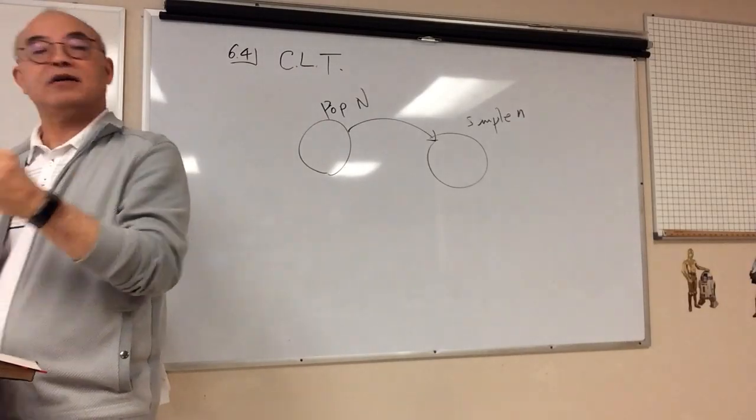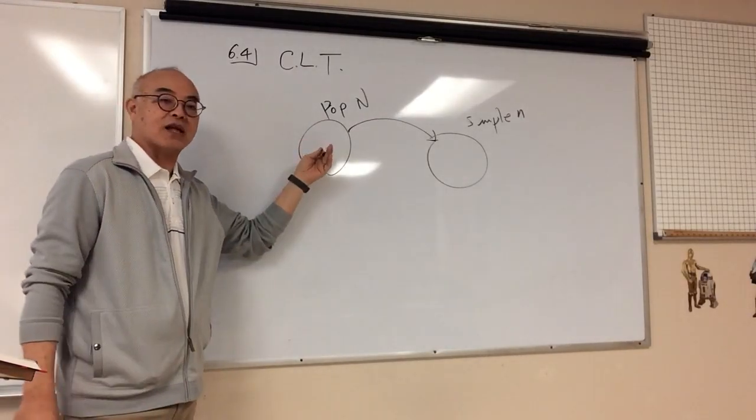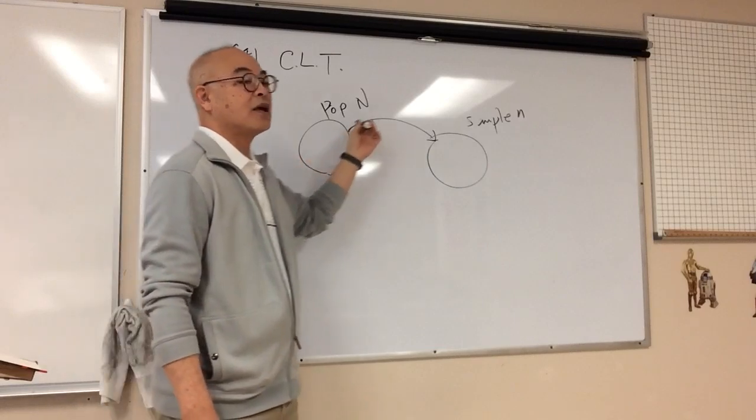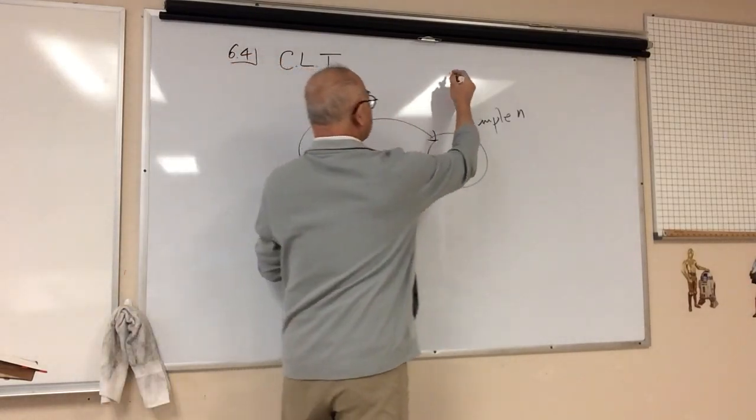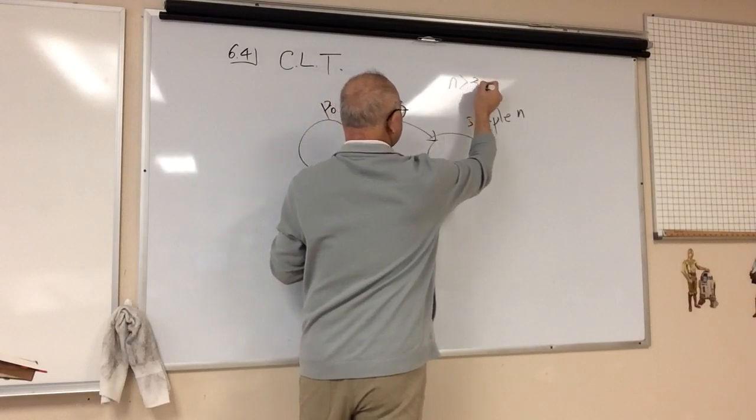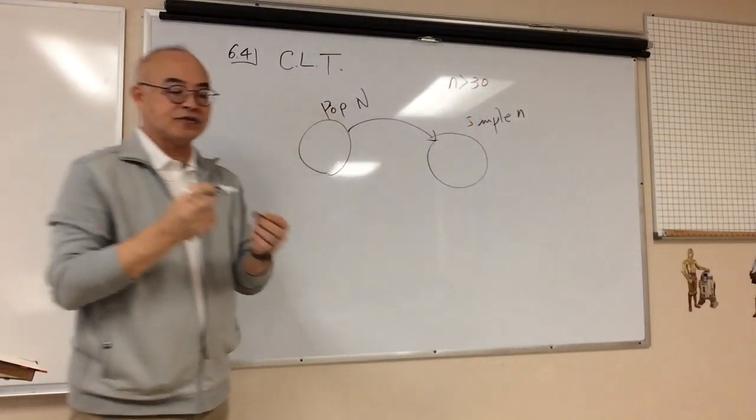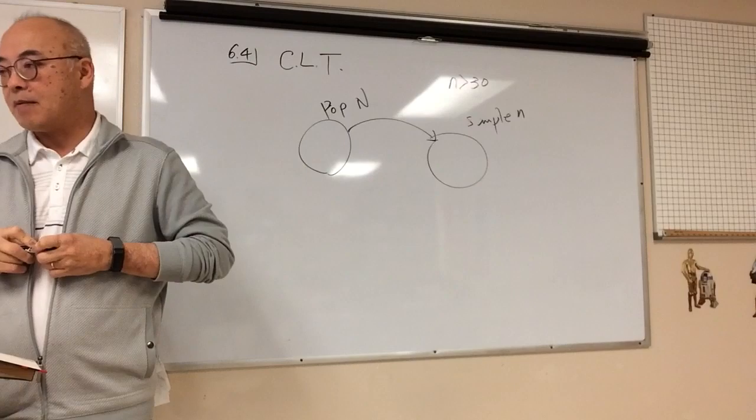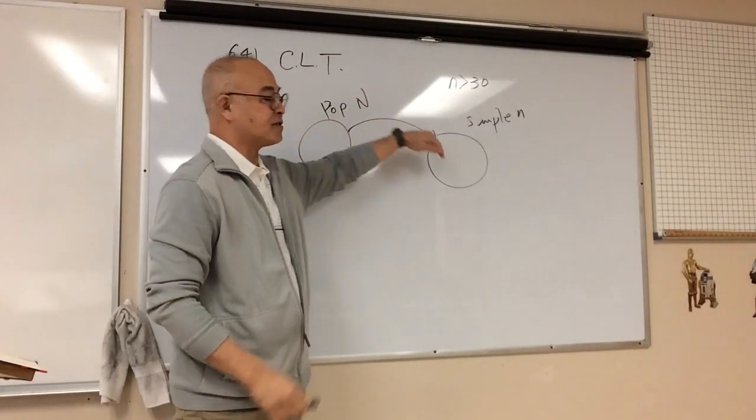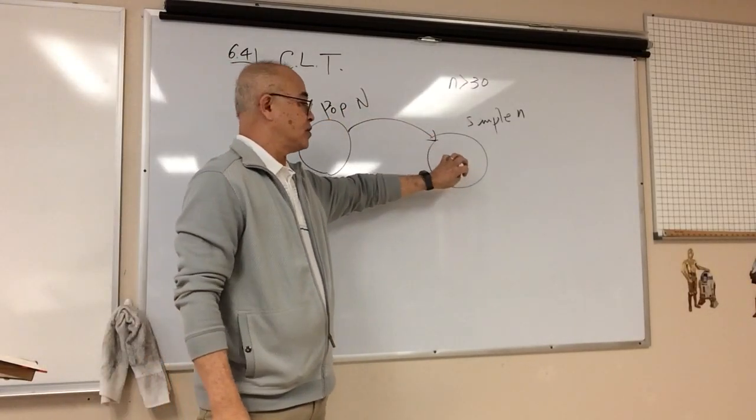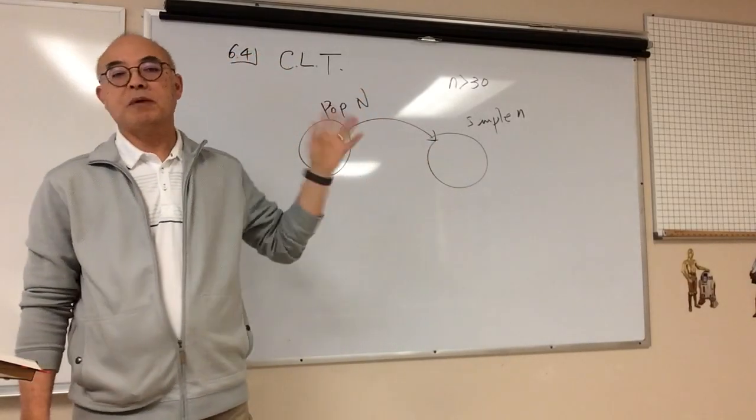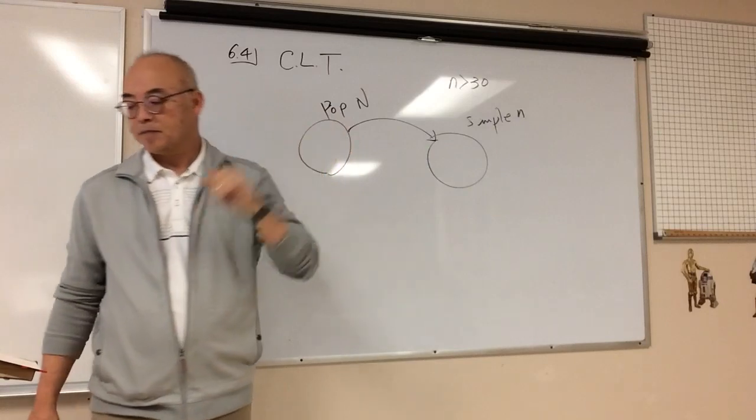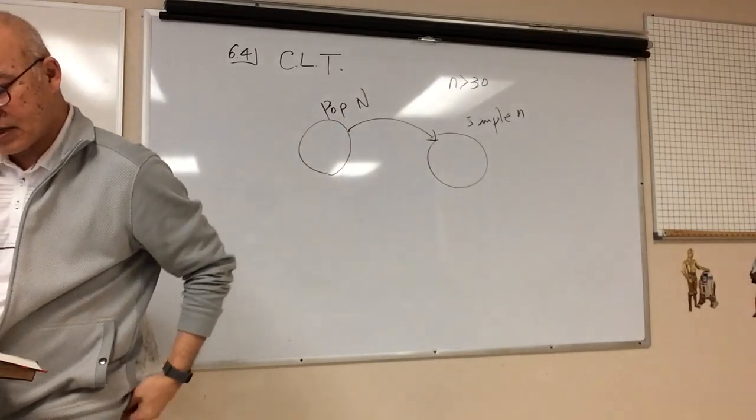So this is exactly what the central limit theorem says. Regardless of what the population looks like, as long as you take enough samples, enough defined as more than 30 samples, your sampling distribution is going to be normal, no matter what the original population distribution looks like. And that's what the central limit theorem says.